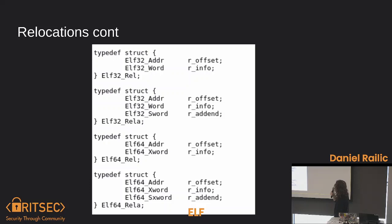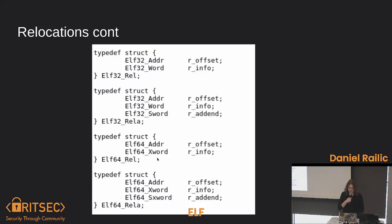That's what the relocation structs look like in C. When you're working with just Rel, you don't have the addend field. When you have the Rela type, you have the r_addend value — the explicit addend. Same thing for 64-bit.